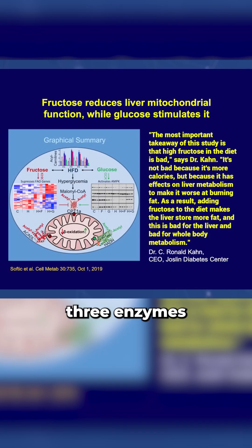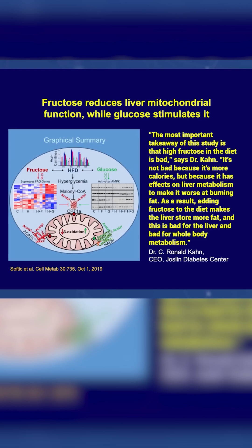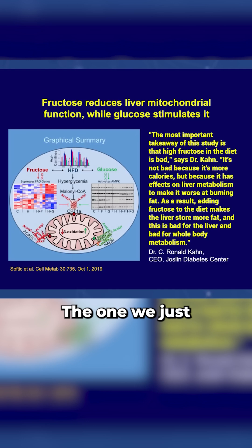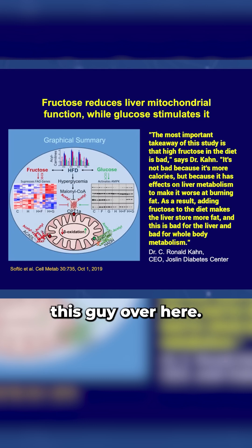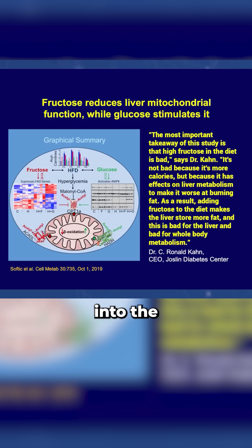Fructose inhibits three enzymes in the liver. It affects AMP kinase, the fuel gauge on the liver cell. It inhibits ACADL — acyl-CoA dehydrogenase long chain — the one that aspirin affects. And it also affects CPT1A, carnitine palmitoyltransferase 1A, the enzyme that regenerates carnitine, which is necessary as the shuttle mechanism for getting fatty acids into the mitochondria for beta-oxidation in the first place.